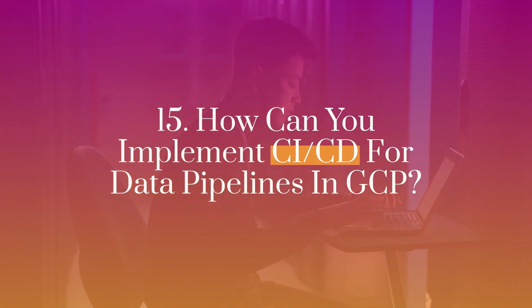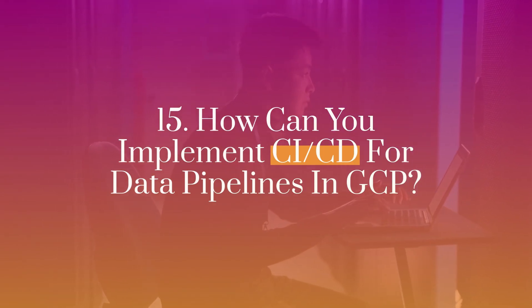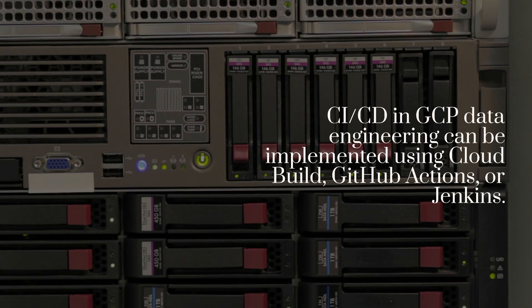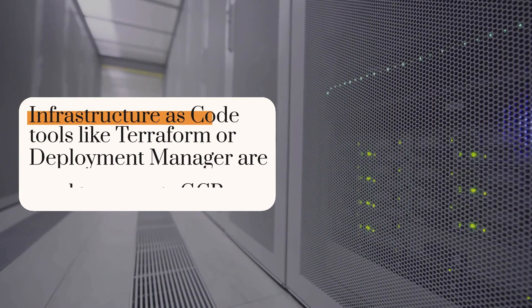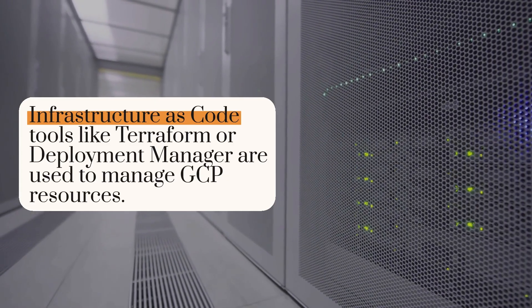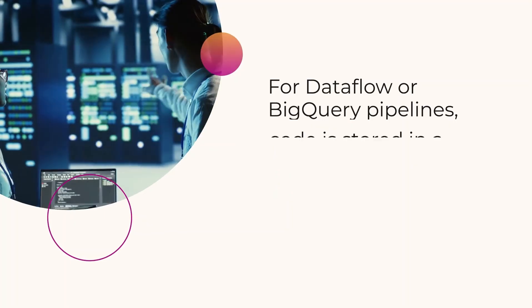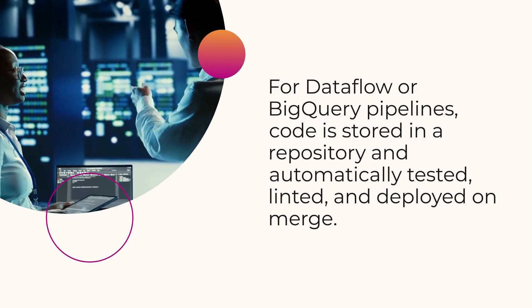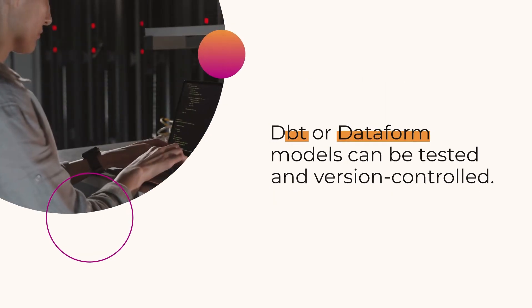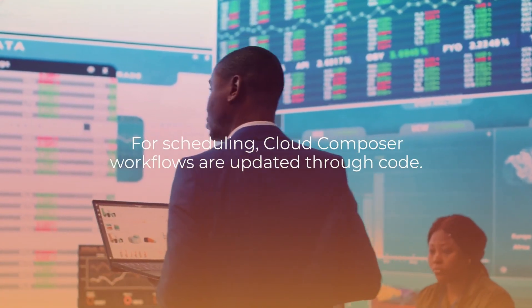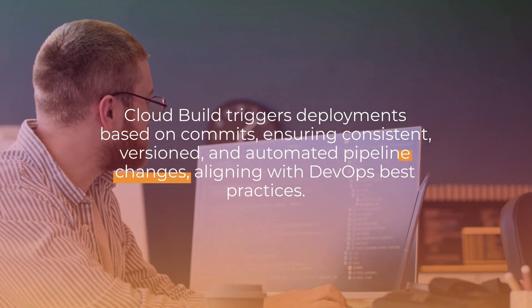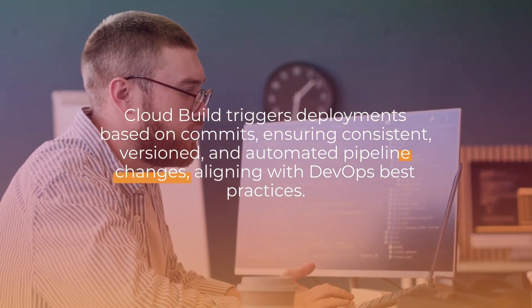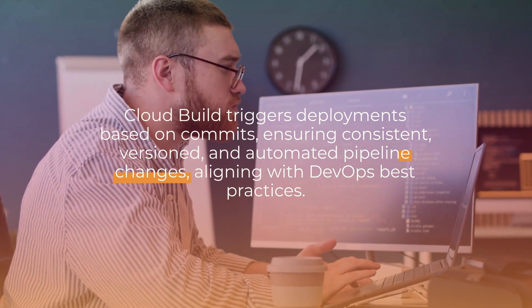Fifteen: How can you implement CI/CD for data pipelines in GCP? CI/CD in GCP data engineering can be implemented using Cloud Build, GitHub Actions, or Jenkins. Infrastructure-as-code tools like Terraform or Deployment Manager are used to manage GCP resources. For Dataflow or BigQuery pipelines, code is stored in a repository and automatically tested, linted, and deployed on merge. DBT or Dataform models can be tested and version controlled. For scheduling, Cloud Composer workflows are updated through code. Cloud Build triggers deployments based on commits, ensuring consistent, versioned, and automated pipeline changes, aligning with DevOps best practices.